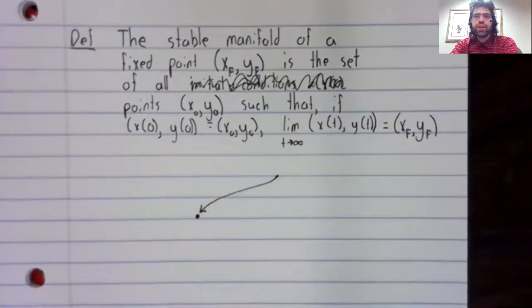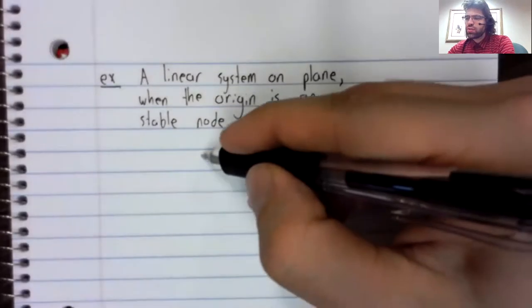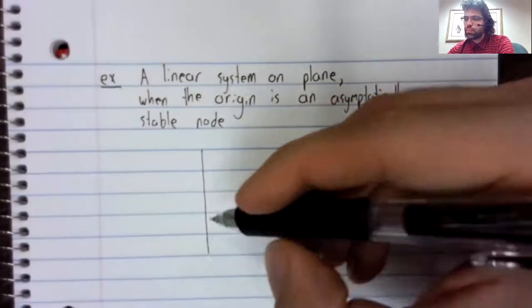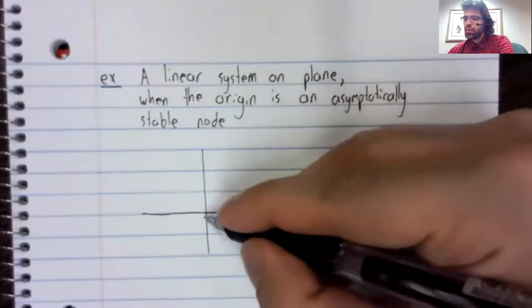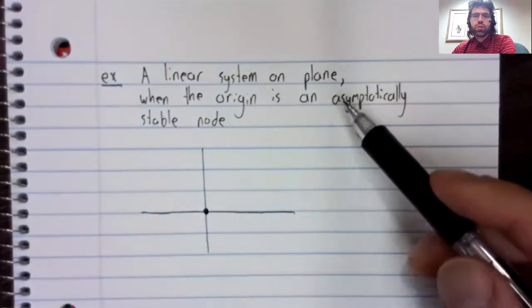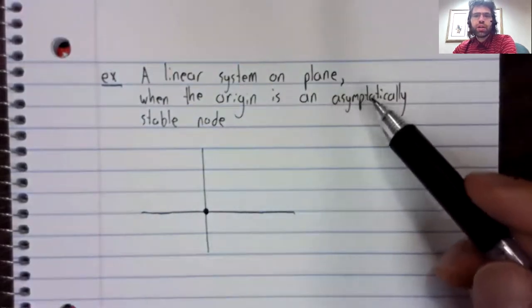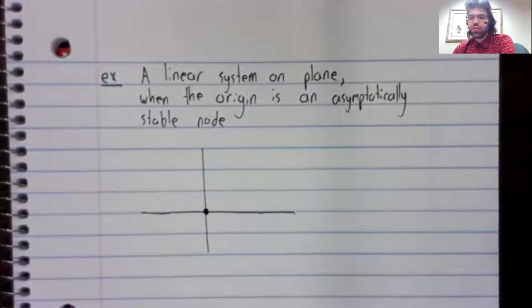Considering a few examples, we'll look at a linear system. The fixed point in question will be the origin, and the origin will be an asymptotically stable node. So two real negative eigenvalues.